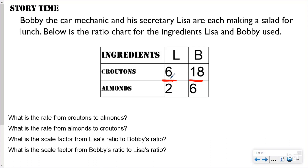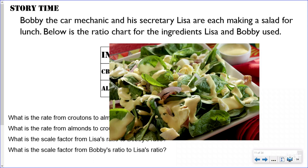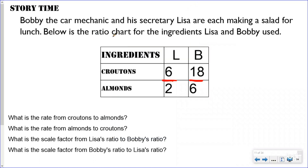Sometimes they put ratios into a ratio table instead of writing them as fractions. Story time: Bobby the car mechanic and his secretary Lisa are each making a salad for lunch. Below is a ratio chart for the ingredients Lisa and Bobby used. L is for Lisa — this is her salad ratio.